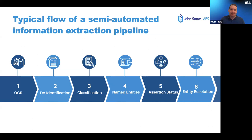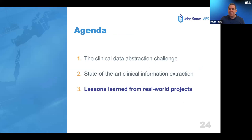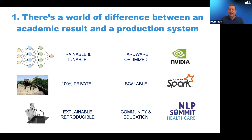Here are tips and lessons learned from real-world projects over the past five years. First, there's a big difference between an academic result and a production system. Having an academic paper or open source code is usually years away from something that works in a real-world healthcare system. Everything from privacy, security, custom models, scalability, optimization, explainability, reproducibility, documentation, webinars, blog posts, public notebooks, and community support matters. Choose a solution you can actually use in practice.